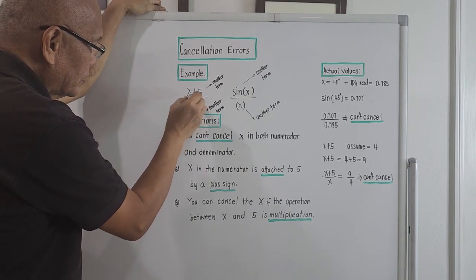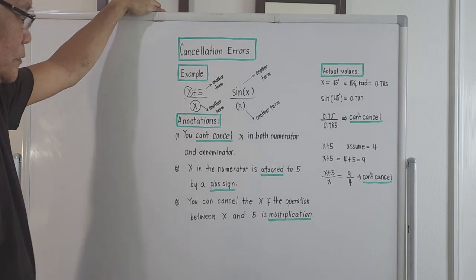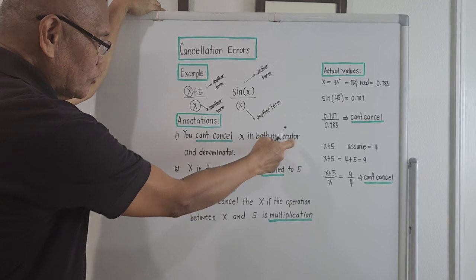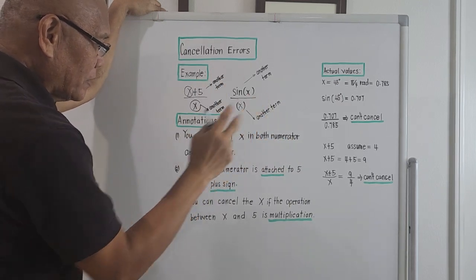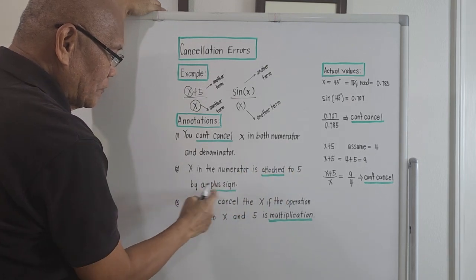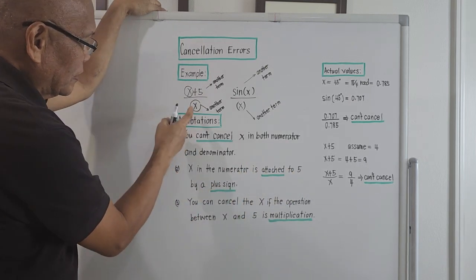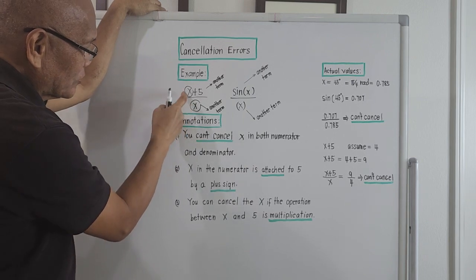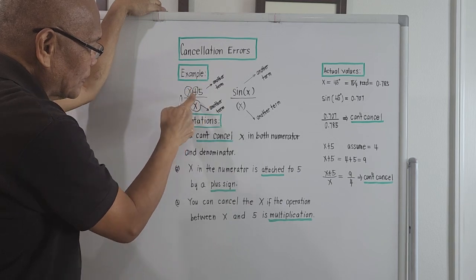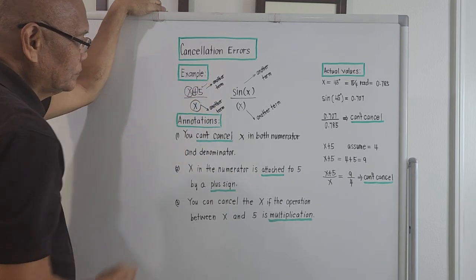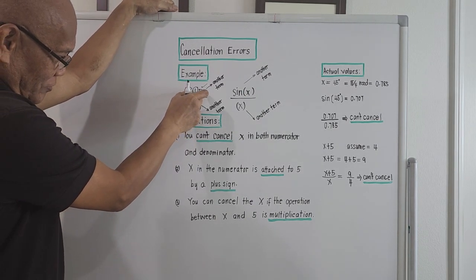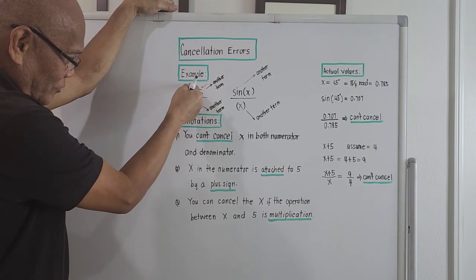According to the annotations, you might think you can cancel x in both the numerator and denominator. But why can't we cancel x here? Because x in the numerator is attached to 5 by a plus sign. They are connected, meaning this term is different from the denominator, so you cannot cancel x.